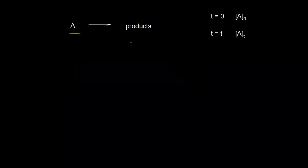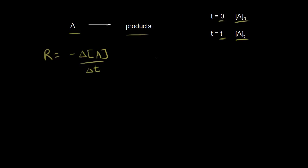Let's say we have a zero-order reaction where A turns into our products. When time is equal to zero, we're starting with our initial concentration of A, and after some time period T, we have the concentration of A at that time. We can express the rate of our reaction as the negative change in concentration of A over the change in time, and also write the rate law: rate equals K times the concentration of A to the zero power. Any number to the zero power is one, so the rate equals K. The rate of a zero-order reaction is a constant — it's independent of the concentration of A.